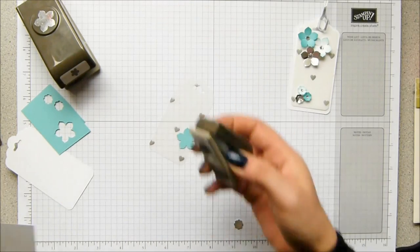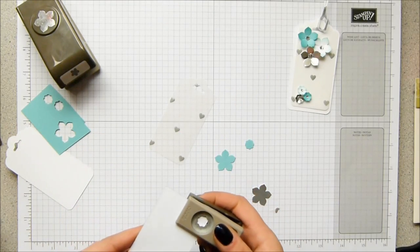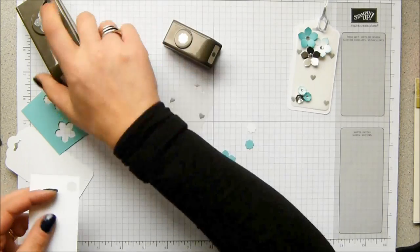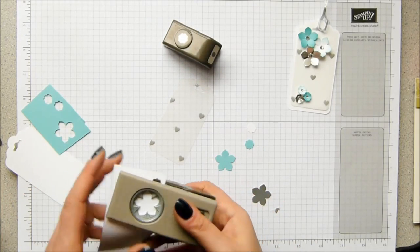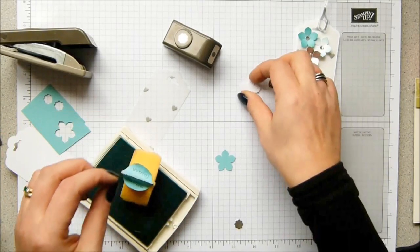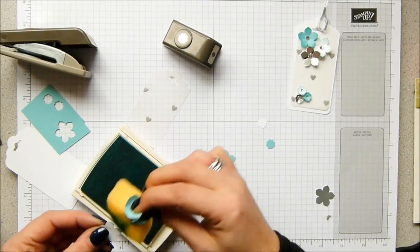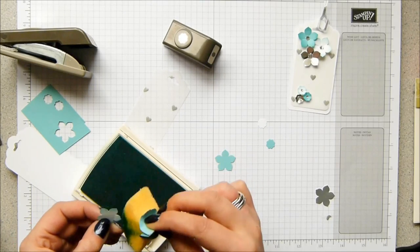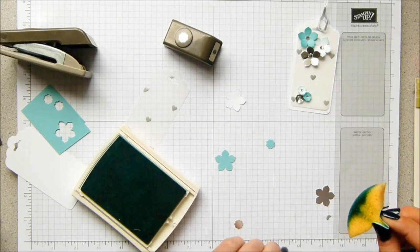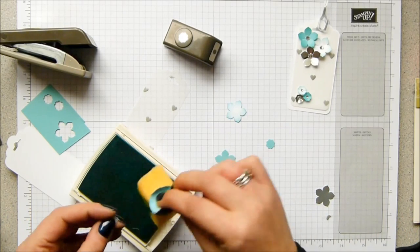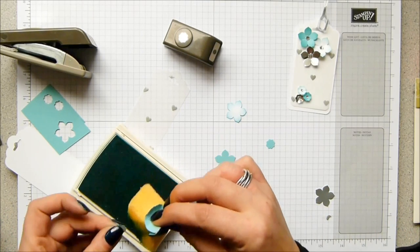So the Itty Bitty Punch Pack and the Petite Petals Punch are a recurring theme in this. So I'll use Soft Suede ink to sponge the edges of my flowers. And I've not done a vast amount of stamping through this week either, because I understand that not everybody is a stamper.